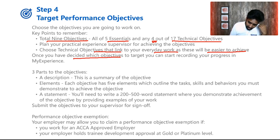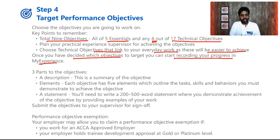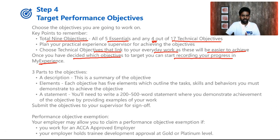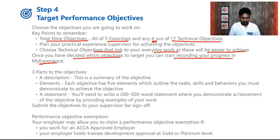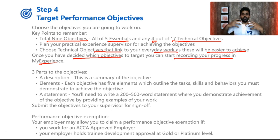Once you have decided which objectives you are going to target, you can start recording your progress in MyExperience. Your performance objective needs to be updated along with the work you're doing. From day one, you can start recording your time — the moment you join a company and get your offer letter, go and update that in your ACCA portal with your joining date. This keeps you focused on how you can progress and track your goals. Keep writing your objectives — you have three years to finish them. It's just a one-time exercise where you update everything and send it out.